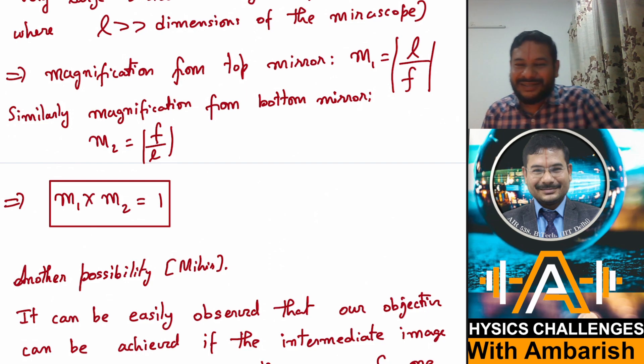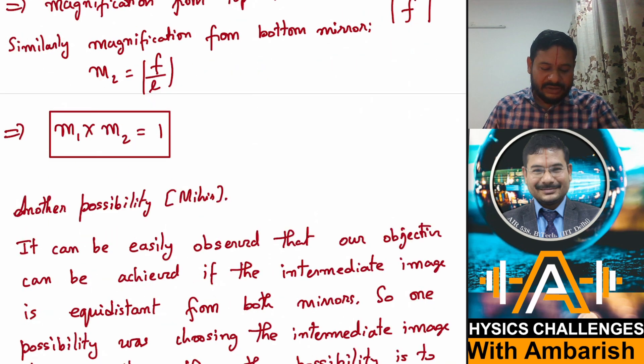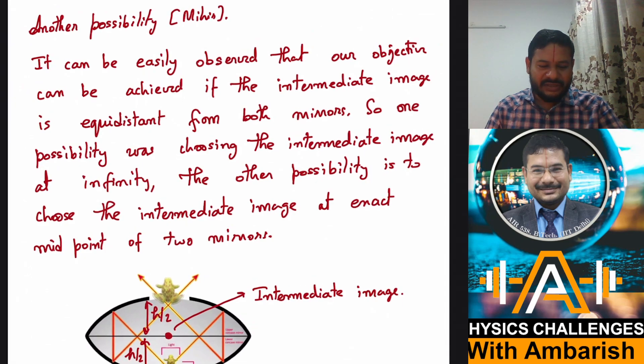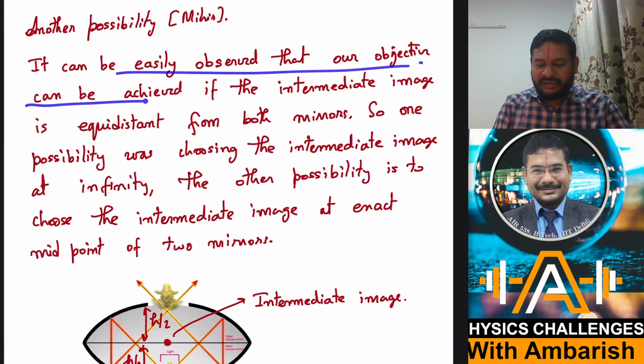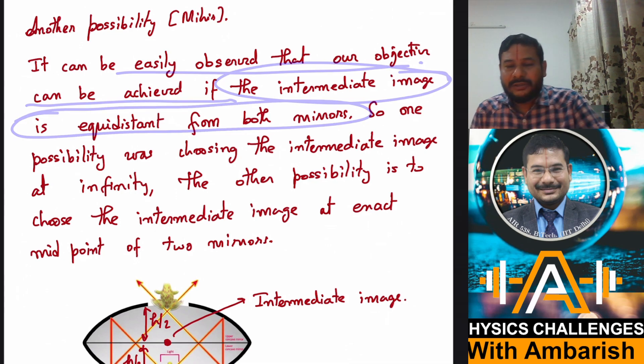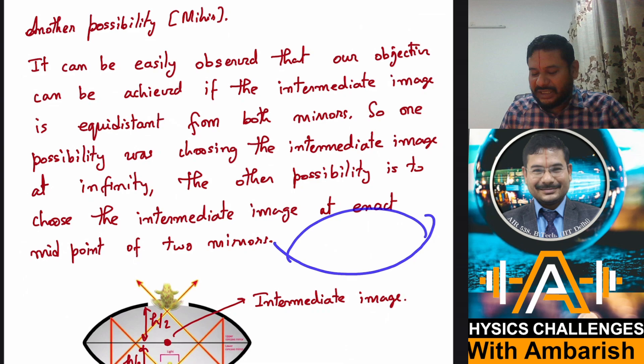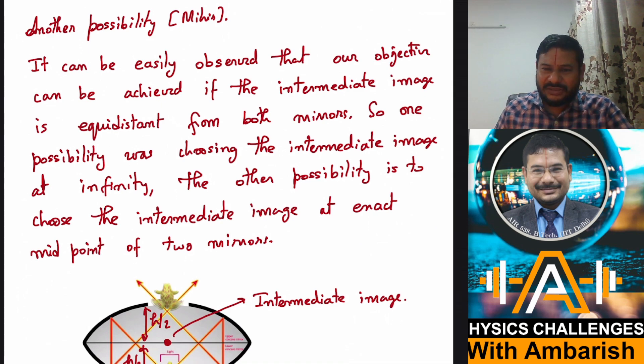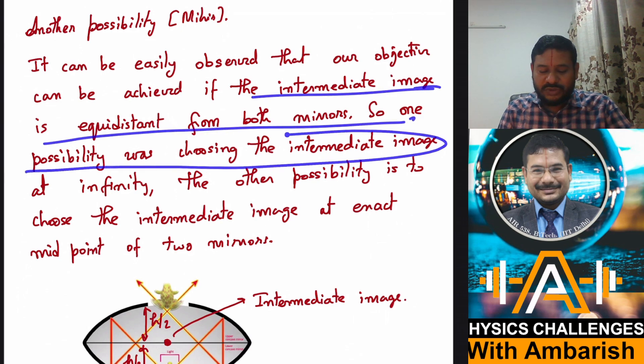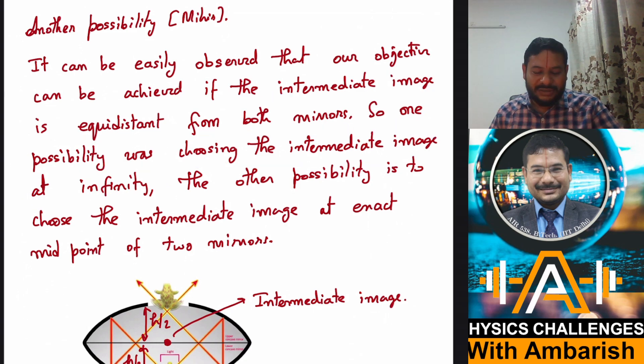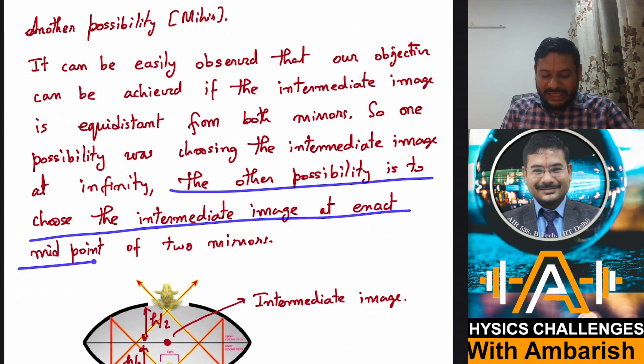Now, it turns out that if we remove the condition of laterally inverted image, then there is one more possibility as pointed out by Mihir in a solution on the community post. So see what was his line of thinking that I'm presenting here. It can be easily observed that our objective can be achieved if the intermediate image is equidistant from both mirrors. Because you see mirror formula is symmetric: 1 by V plus 1 by U is equal to 1 by F. It is symmetric in V and U. So therefore, if the intermediate image is formed here and the initial object is here, then final image must be over there. So that's what he guessed and it's perfectly correct. So our objective can be achieved if the intermediate image is equidistant from both the mirrors.